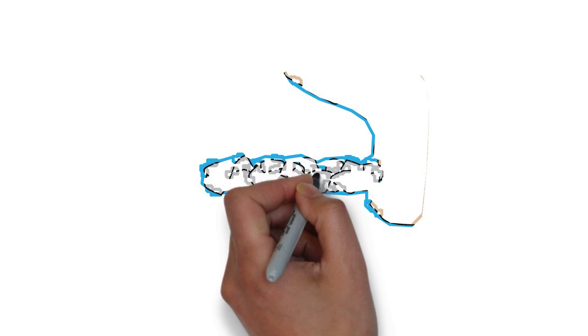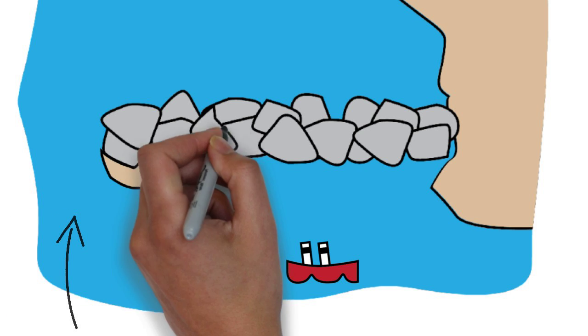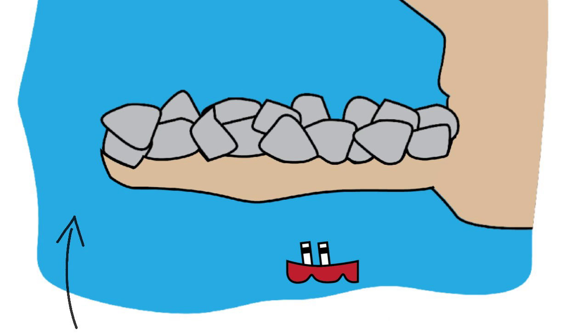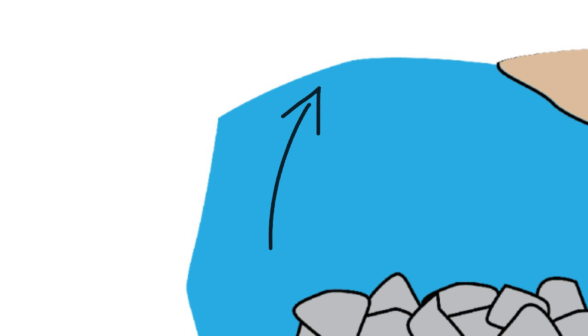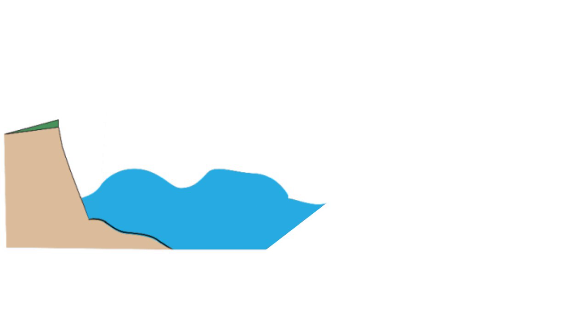We also build structures like jetties. These structures extend perpendicularly from the shore and prevent shipping channels from filling in with sand. On the updrift side, the structure acts as a trap, collecting sand from the current and growing the beach. But on the downdrift side, the beach disappears, because all the sand has been collected on the other side of the structure.